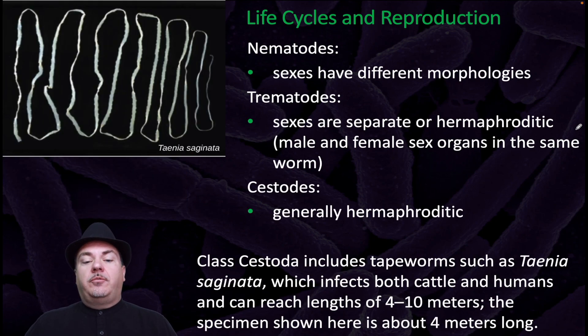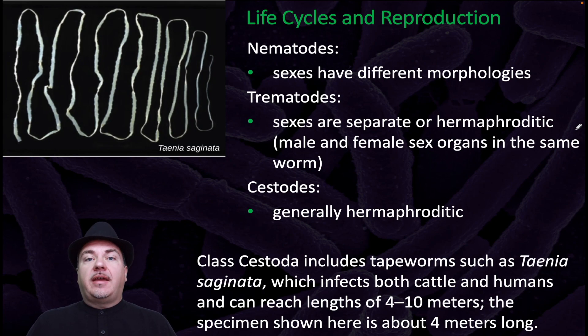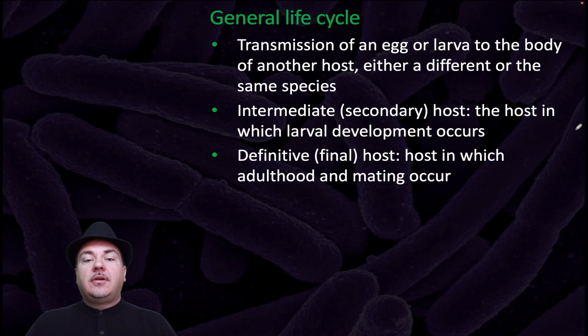Continuing the flatworms, we have the cestodes, or the tapeworms, which are generally hermaphroditic. Here's an example of a tapeworm that infects both humans and cattle, which can reach lengths from 4 to 10 meters long.